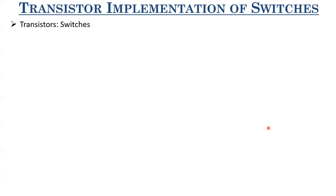Here we'll be talking about MOSFETs as a switch. Why MOSFETs? BJTs were also pretty common — till the 1990s or so, BJTs were dominating the market, as discussed in the first lecture. But beyond that, it was MOSFETs which continued to dominate the market, and even till now it's MOSFETs which have been dominating. So we'll be talking about MOSFETs.